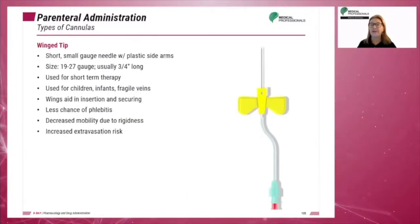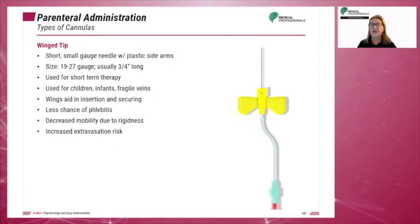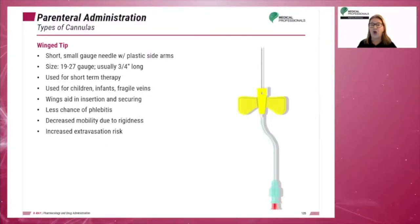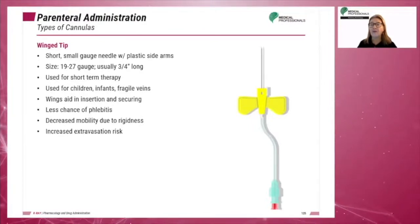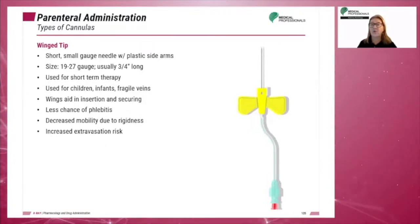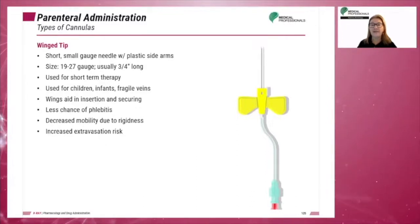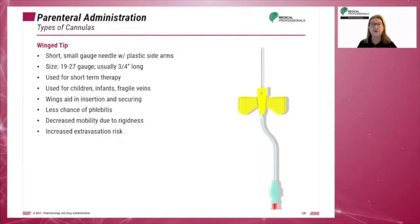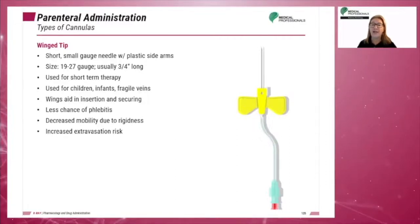Wing-tipped cannulas, or butterflies, are short, small-gauge needles with plastic side arms. They are sized 19 to 27 gauge and are usually three-quarters of an inch long. Wing-tipped cannulas are used for short-term therapy and can also be used on children, infants, or adults with fragile veins. The wings aid in insertion and securing the needle. These cannulas have a lower risk of phlebitis but suffer from decreased mobility due to the rigid needle and present an increased extravasation risk.